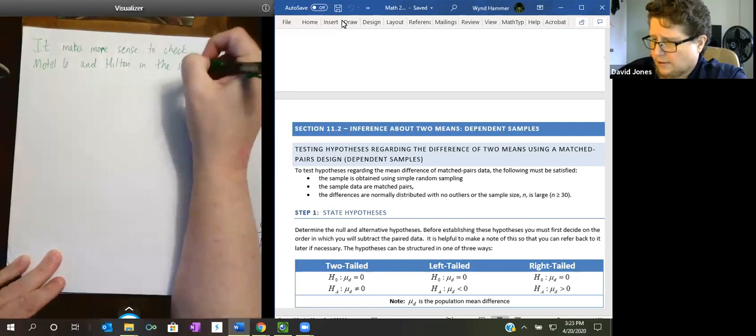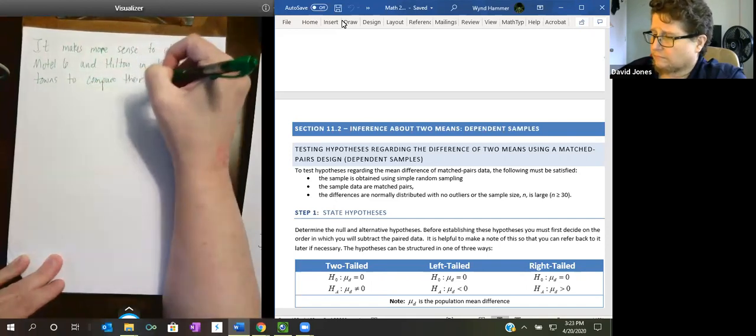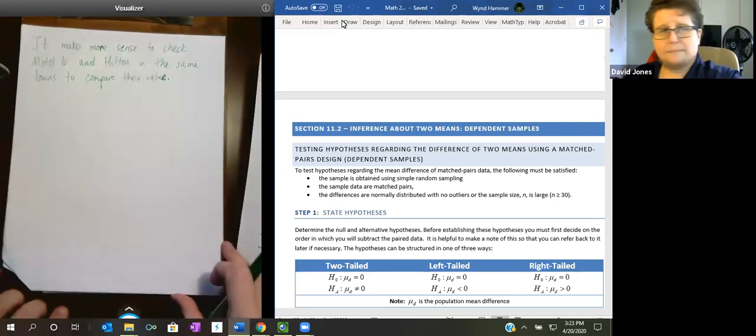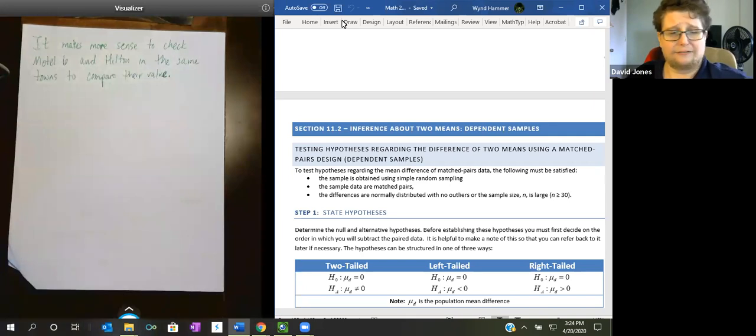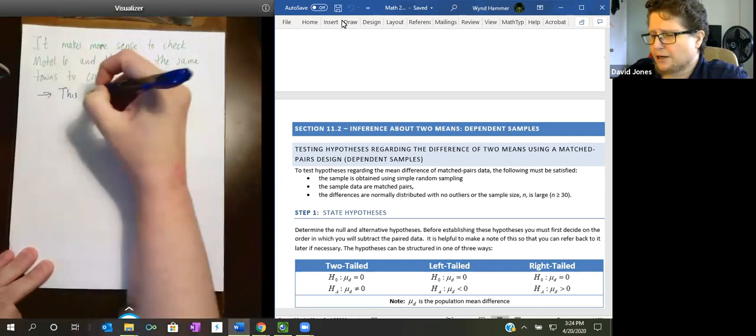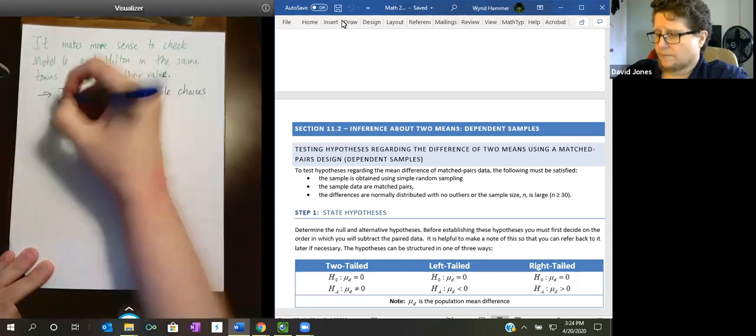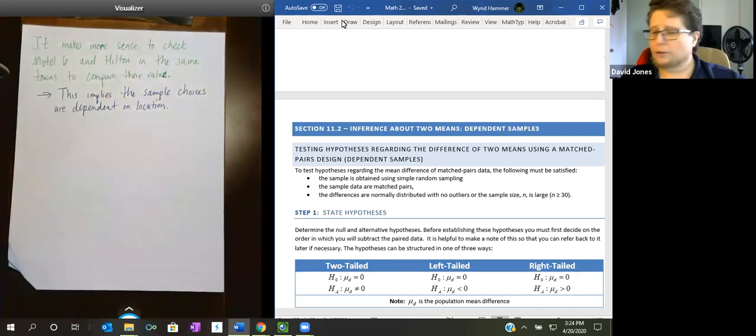It makes more sense to check Motel 6s and Hiltons in the same town to compare their value. But now, this implies they're dependent on location. The sample choices are dependent on location. So that's what they mean by having a dependent sample or paired sample.